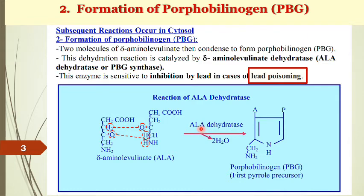ALA dehydratase acts on delta-ALA and synthesizes porphobilinogen (PBG). You have to know the name of the product. The names are somewhat difficult, so study them carefully and very slowly. You can study the eight reactions across three days — divide them and memorize them carefully.